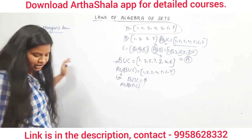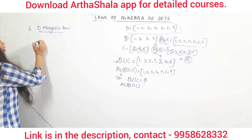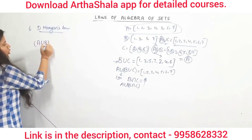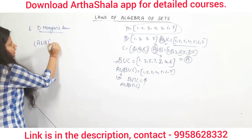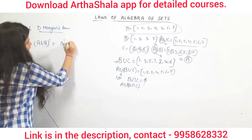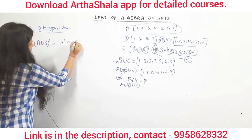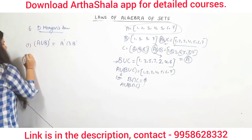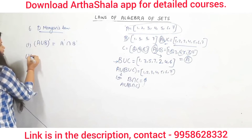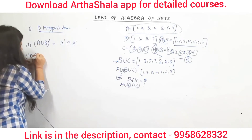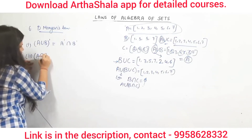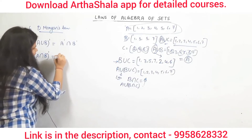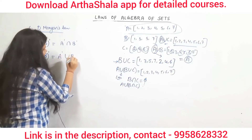Now there is one very important law which is widely used in applications: De Morgan's Law. The first De Morgan's law states that the complement of A union B — written as (A union B) complement — is equal to A complement intersection B complement.